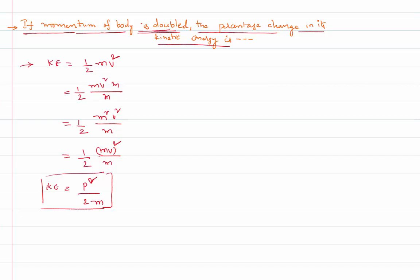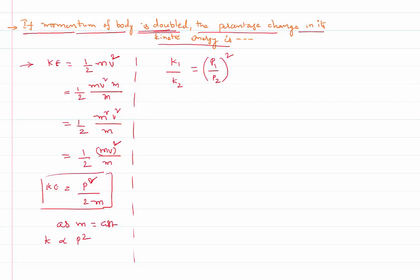Now let's apply this to the problem. When the momentum of the body is doubled and the body's mass is kept constant, kinetic energy is directly proportional to p squared. So I can write: k1 by k2 equals p1 by p2 whole squared. If p1 is p and p2 is 2p, we substitute into this equation.